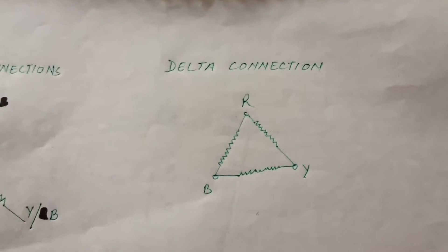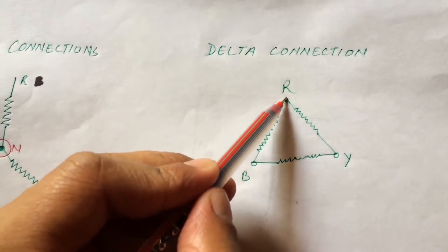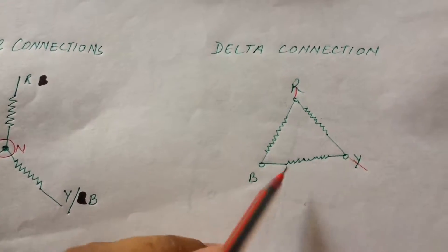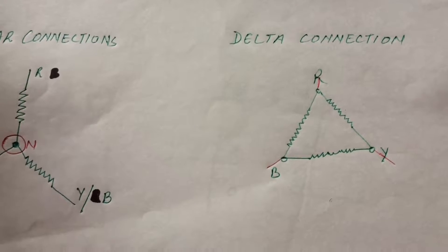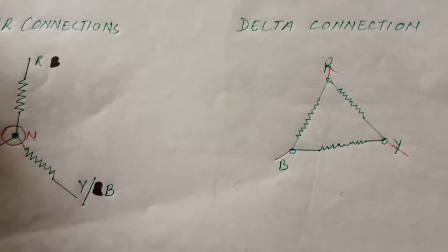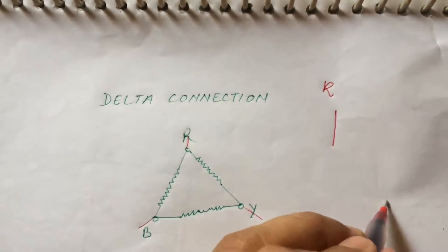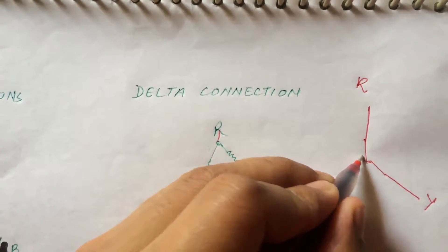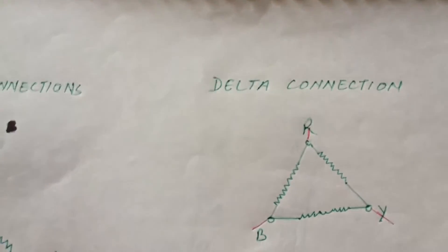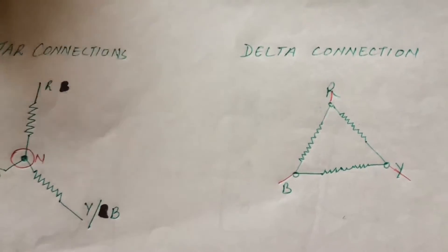In case of a delta connection, we need to connect one phase to another phase, creating a delta shape — red, yellow, and blue. One thing you need to remember: never ever connect one phase to another directly. If this is your red phase and this is your yellow phase, never connect these two phases directly at one point, because it can cause a short circuit between them.